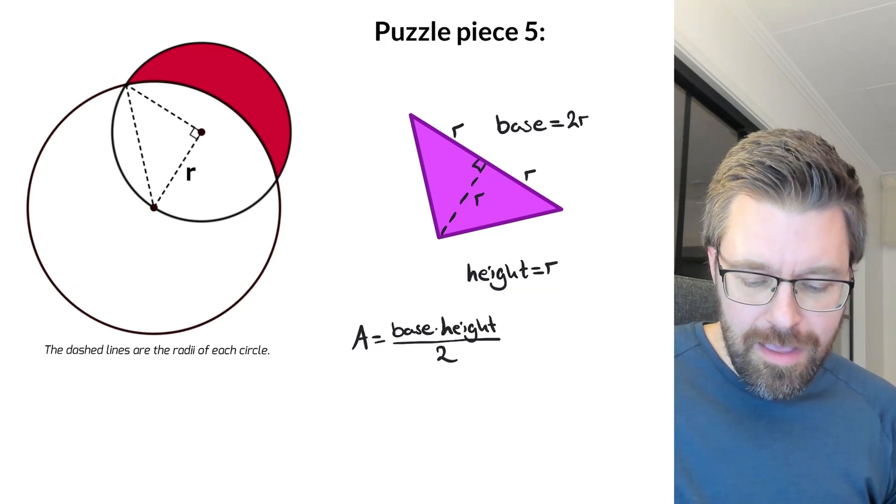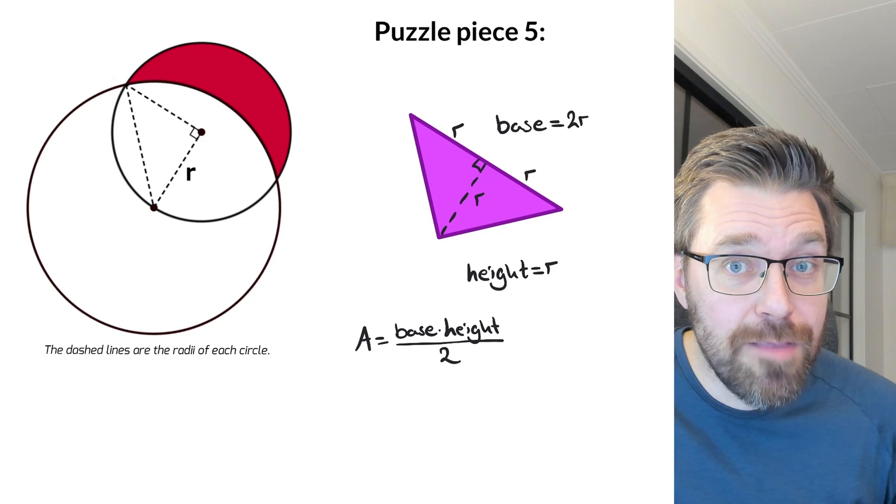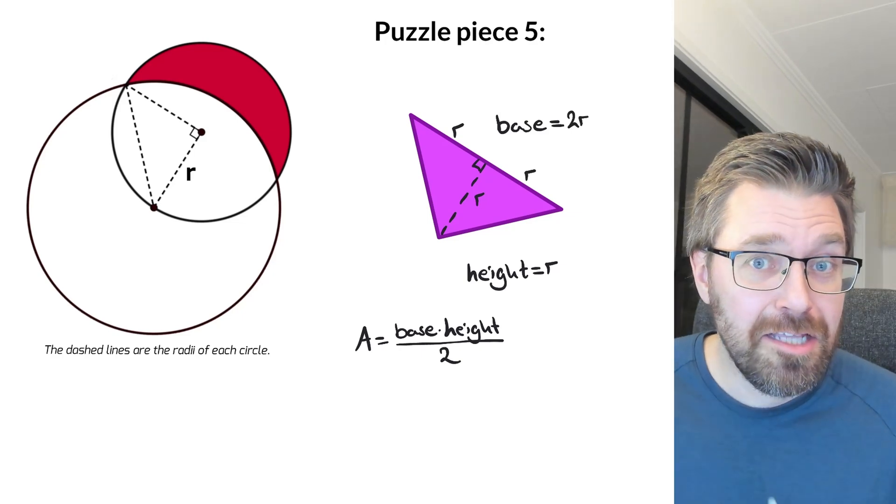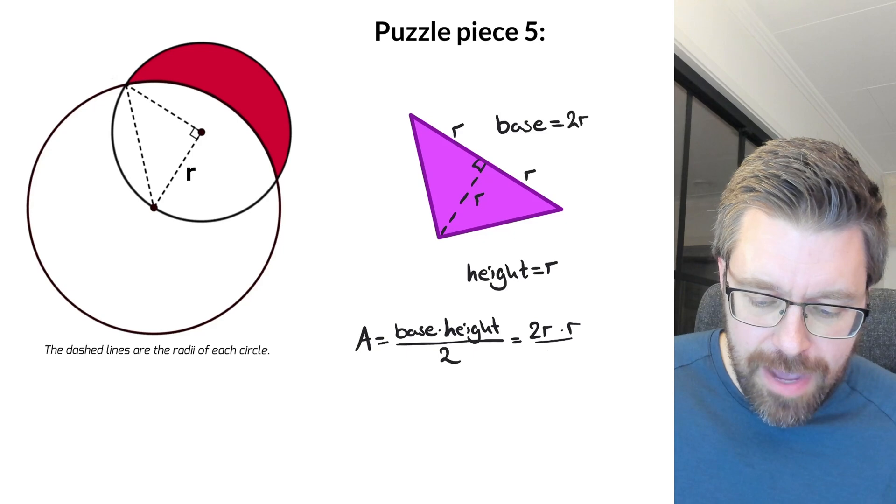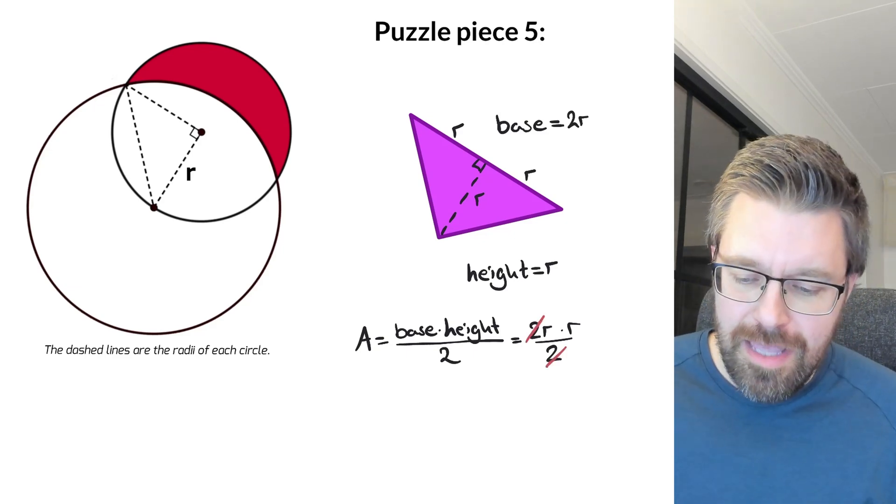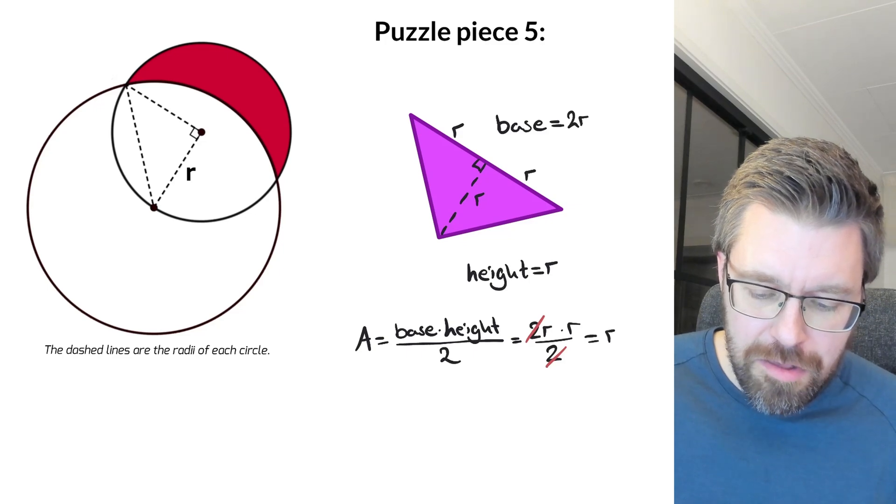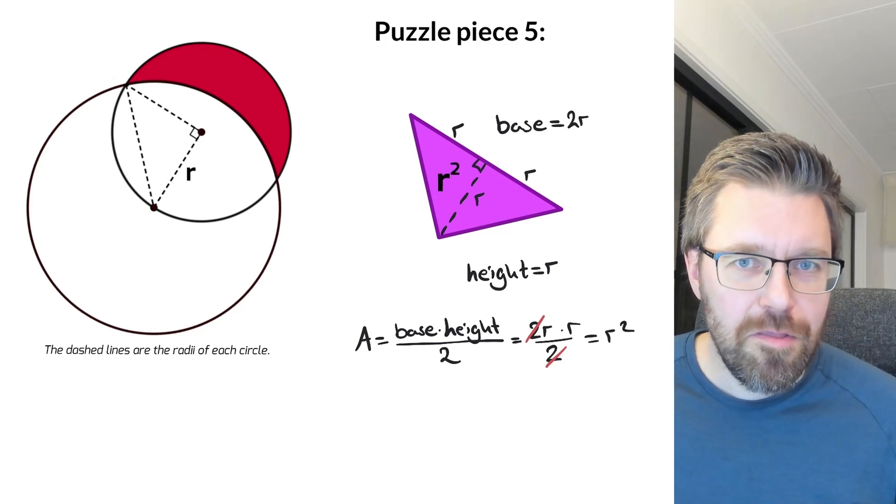And we know that the area of a triangle, we can take base times height and divide by two. And in this triangle, it is two r times r divided by two and cancel out the number two up and down. And then we have r squared. So this area is r squared.